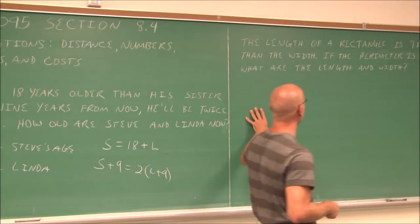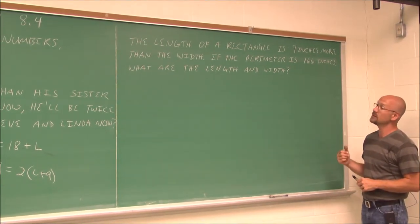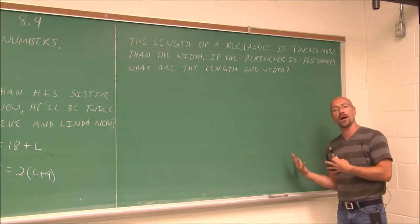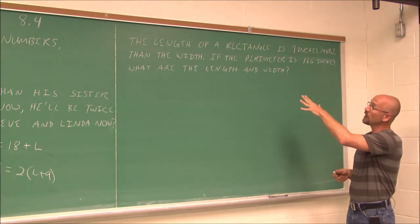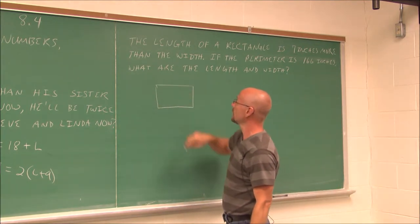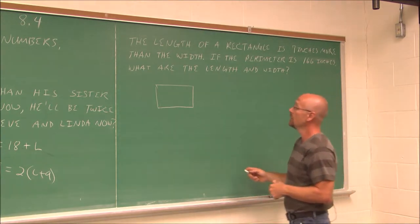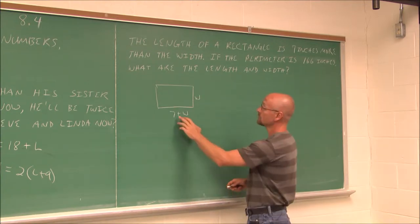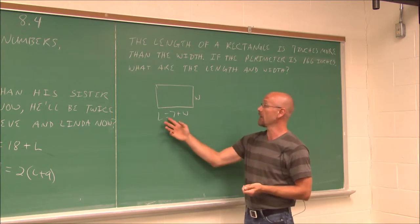Let's look at the next example here. It says, the length of a rectangle is seven inches more than the width. If the perimeter is 166 inches, what are the lengths and widths? When we deal with rectangles and we're told something about perimeter, maybe it's helpful to draw an illustration. So I'm just going to draw a simple rectangle. The length is seven more than its width. So I'm going to use w as my variable. So seven plus w is my length. So I actually built an equation just from that first statement.